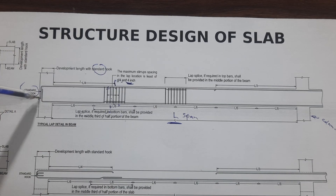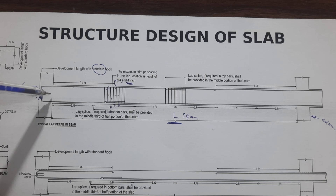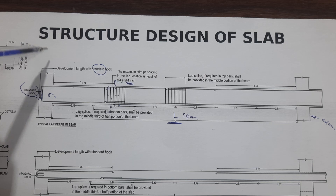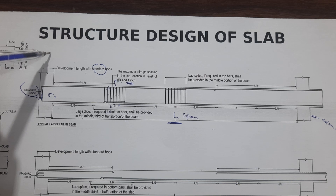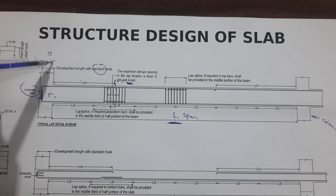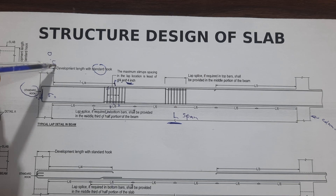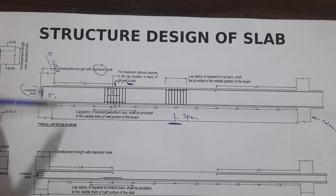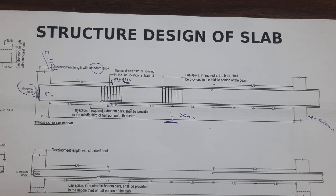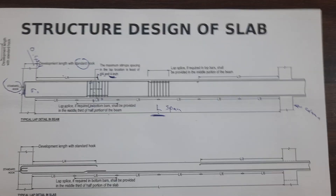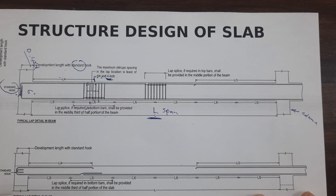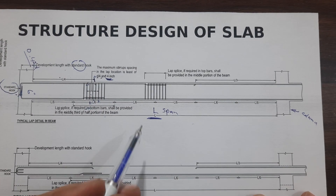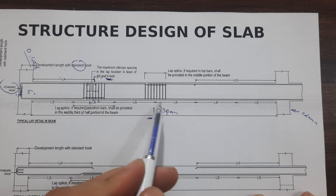Next, you can see dual stirrups with standard hooks. These are standard hooks — it is very important to provide them in the beam. The development length should not be less than 6 inches, but you can also use the specific formula: 0.42D, where D is the diameter of the steel bar.